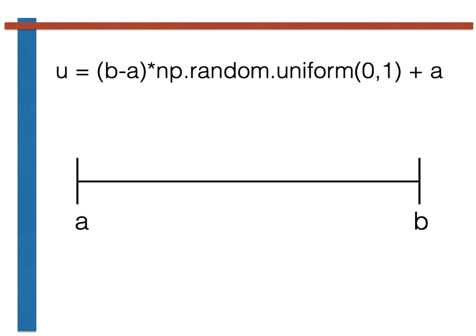As you can thus see, we can write programs to generate continuous uniform random variables between any lower bound a and any upper bound b of our choosing by using the command on this page. Thank you for your attention.